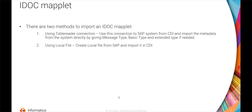Data is sent from SAP in the IDOC format and needs to be interpreted so that the target system understands which values correspond to which fields. For that purpose we use an IDOC maplet. The IDOC maplet can be imported in the IDMC platform in two methods: one is using the table reader connection, and another is using a local file. The table reader connection connects to any table reader connection to the same SAP system, and using that we can import the metadata. For the local file method, we create the local file from the SAP system and import it to get the metadata.